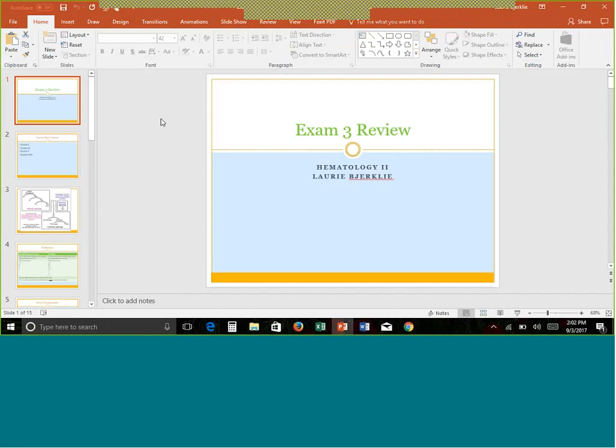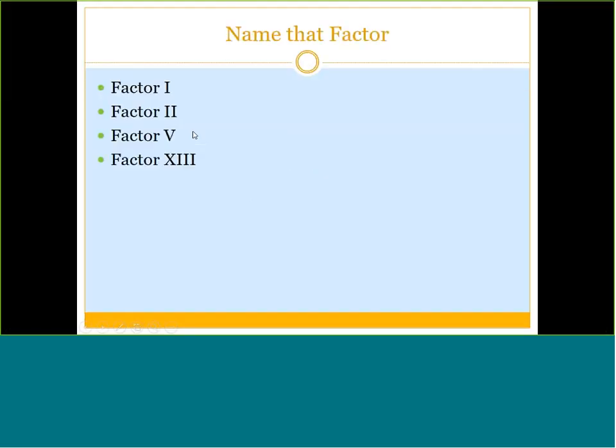The third exam for Hematology 2 is based entirely on coagulation, so it'll be week 7 through 9 content. We need to remember the names for our factors. I listed four random ones here but there are many more. Be sure you know the factor names — factor 1 is fibrinogen, factor 2 is prothrombin, factor 5 is the labile factor, and factor 13 is the fibrin stabilizing factor. Go back to that list from week 7.